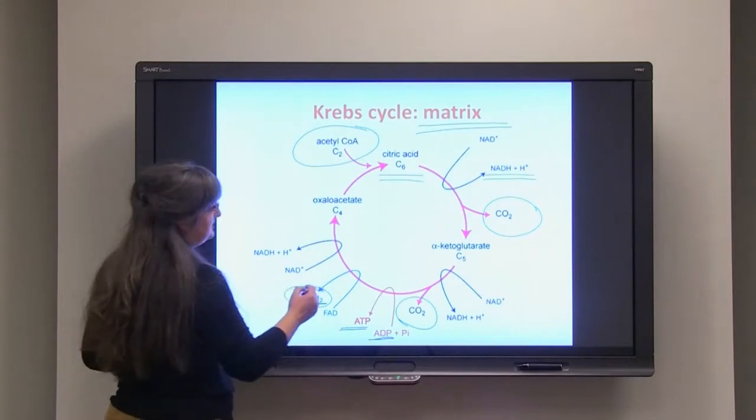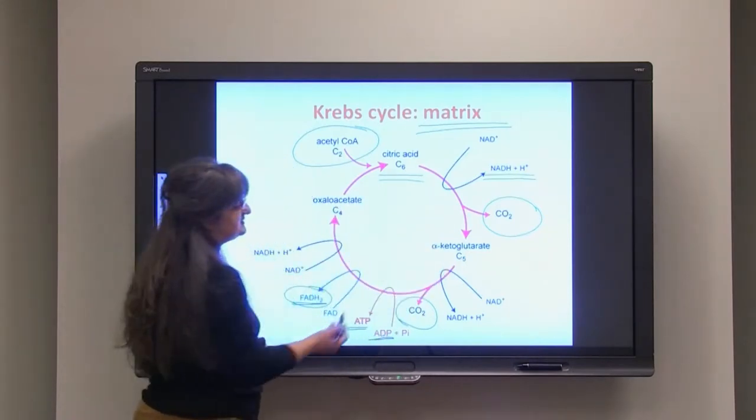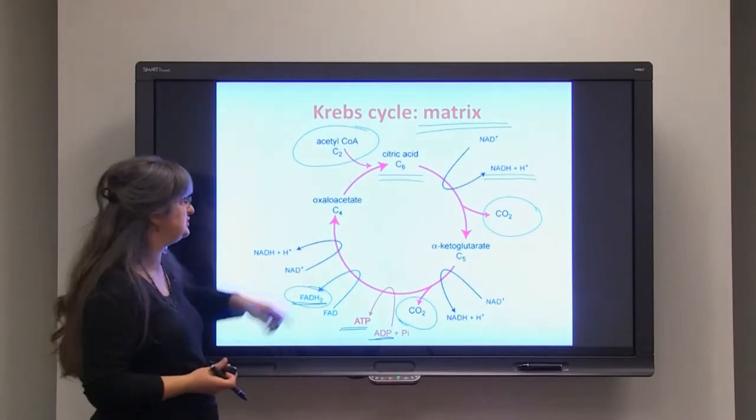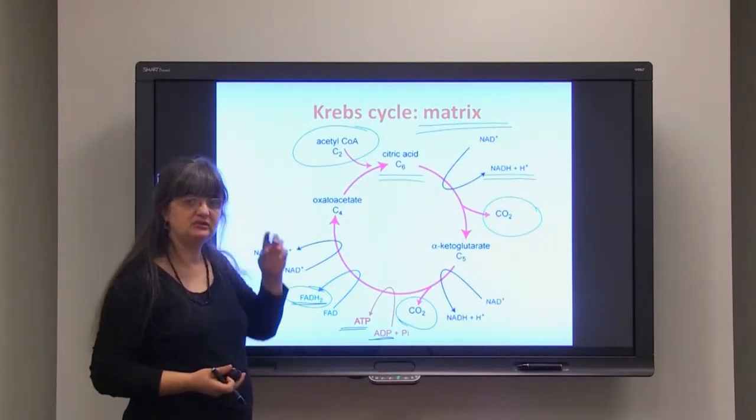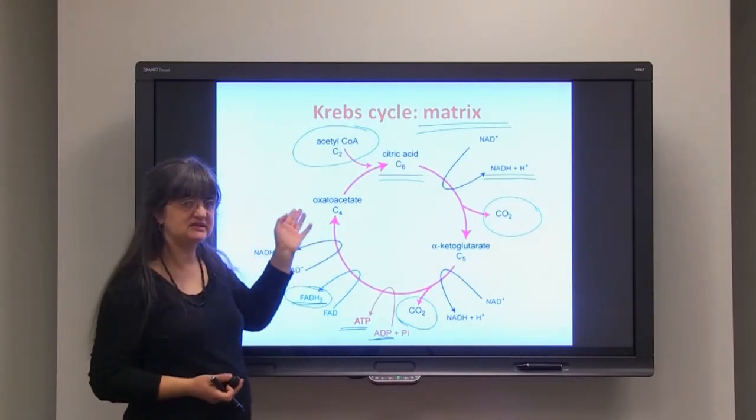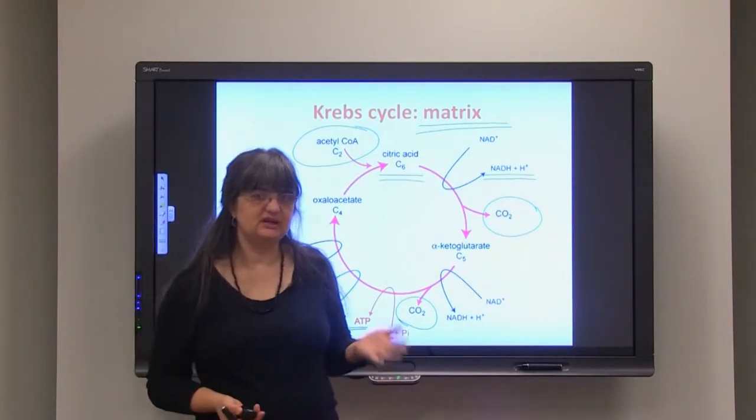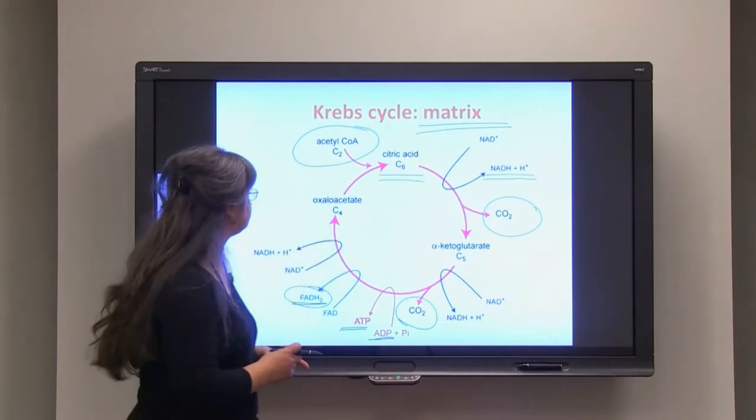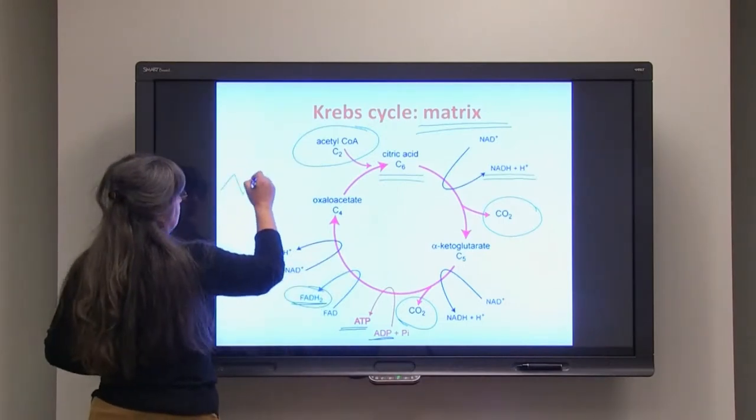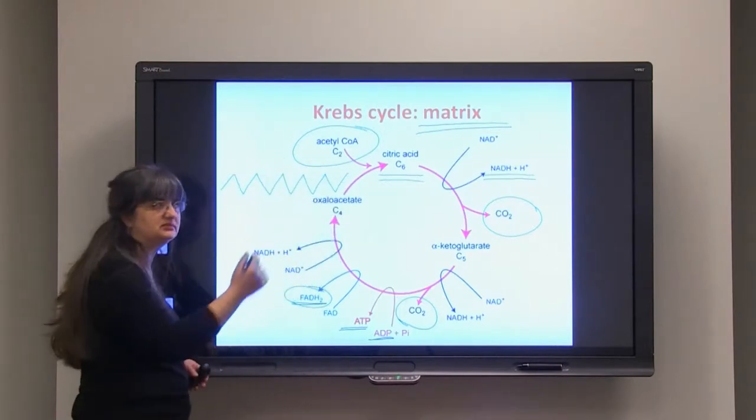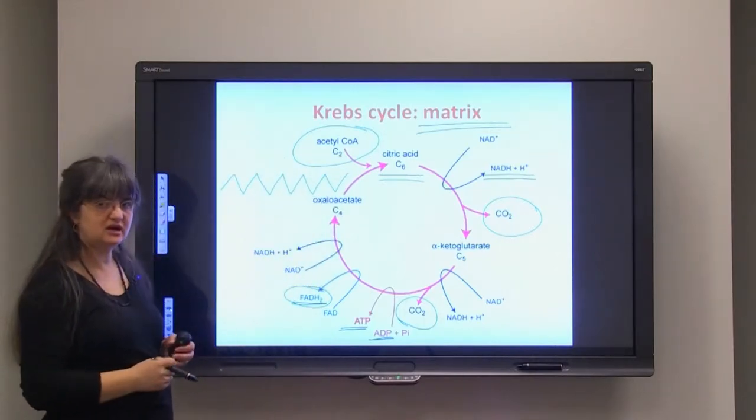Overall, Krebs cycle is happening for each of the two carbon atoms that are attached to acetyl coenzyme A. It doesn't need to be sugar. For instance, fatty acids, some of them can have 18 or 20 or whichever number of carbons in them.